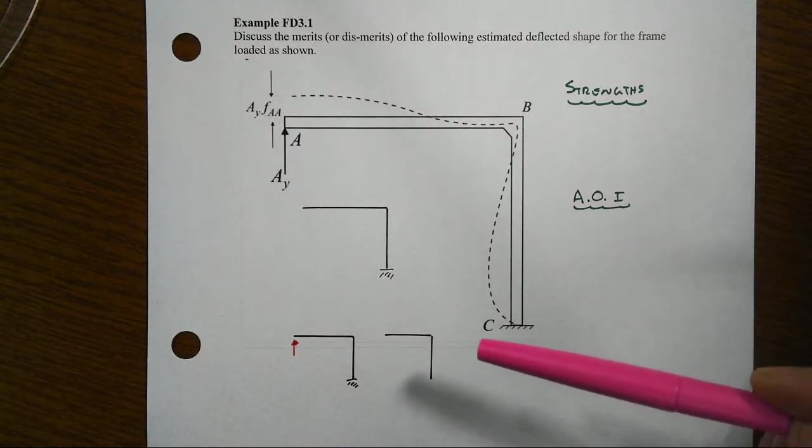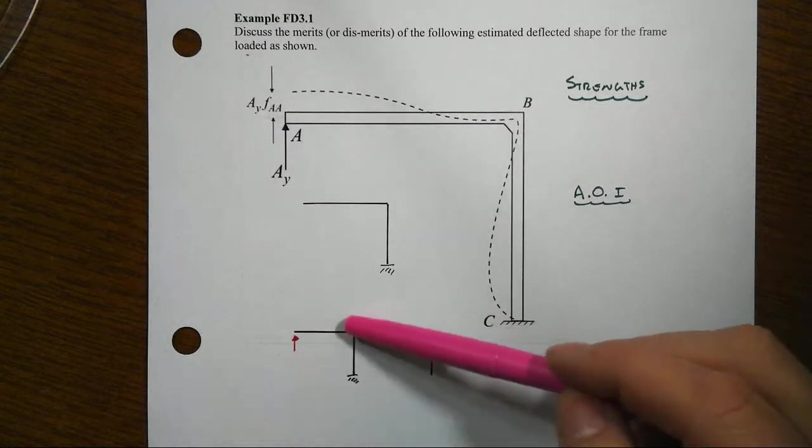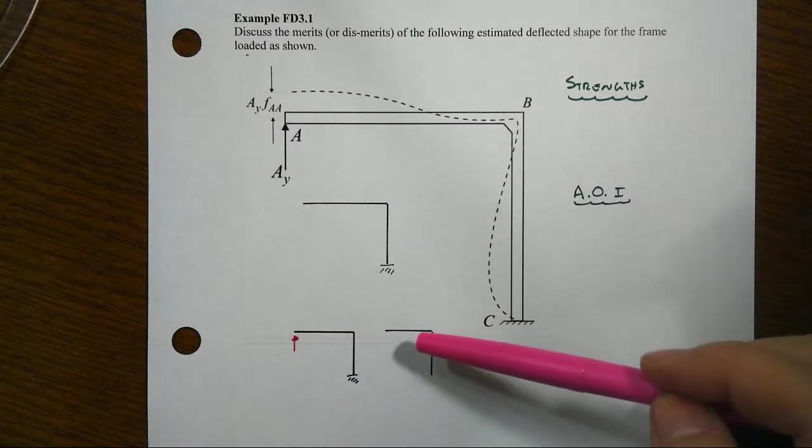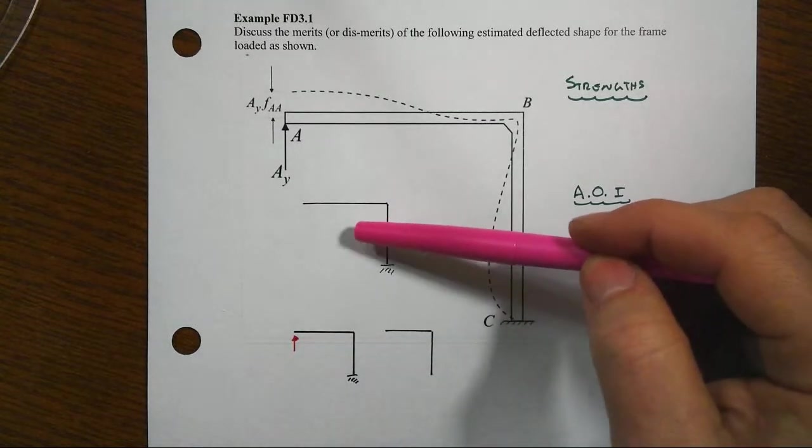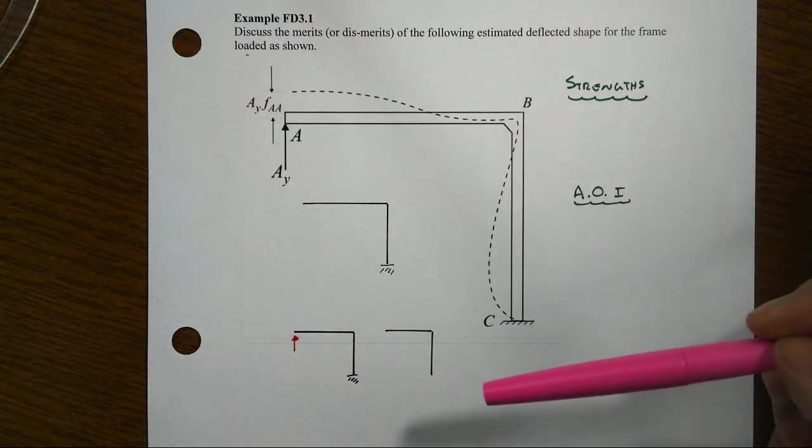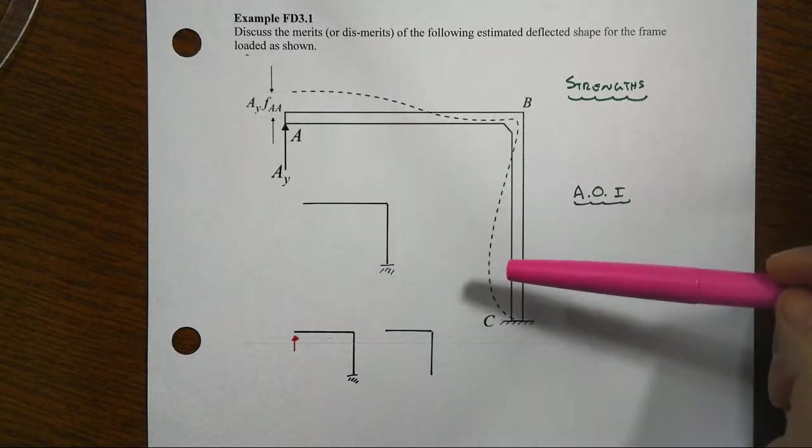Ultimately what we are going to do is, here's this real situation we're looking at, we're going to look at the moment diagram, and then we'll come back with an improved qualitative deflected shape for this structure.